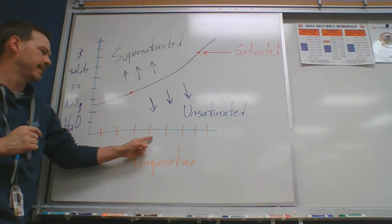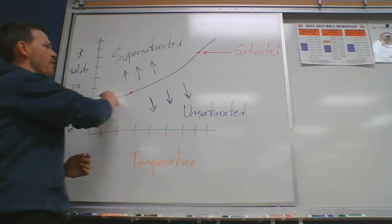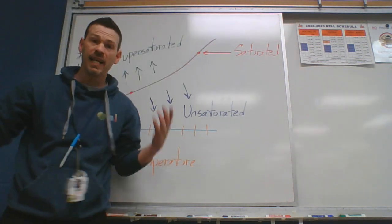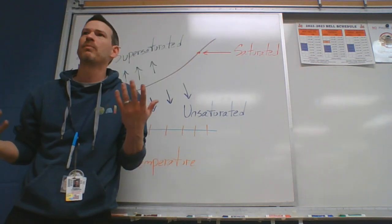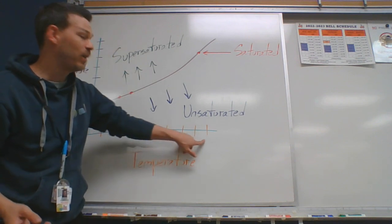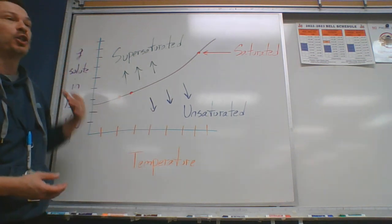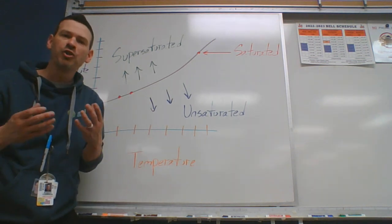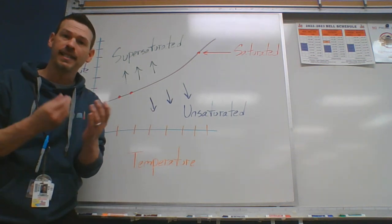On your other axis is the temperature. And what you'll notice on the curve, see this brown line? This brown line is a random solute, a random salt probably. And you'll notice that as you increase the temperature, the amount of solute that can dissolve also usually increases as well.